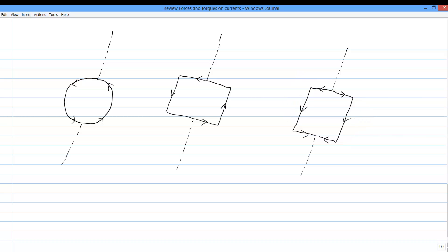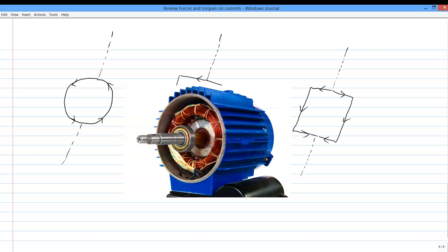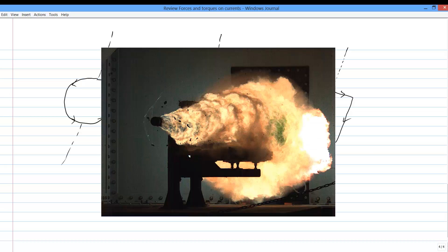So now we know how to use magnetic fields to exert forces and torques on current carrying wires. As it turns out, that ability leads to an awful lot of our modern technology, including but not limited to mundane things like electric motors and more exotic things like railguns.